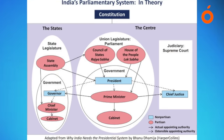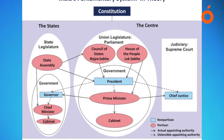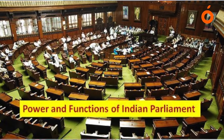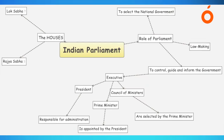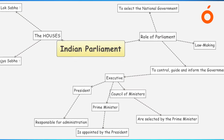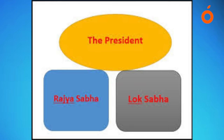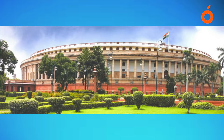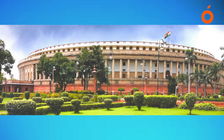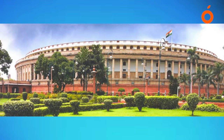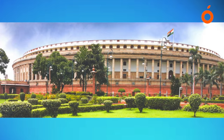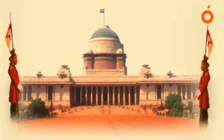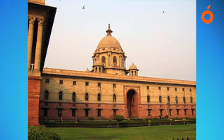One of the most important committees includes the Financial Committees such as the Estimates Committee, Public Accounts Committee, and the Committee on Public Undertakings. The function of the Public Accounts Committee is to examine the annual accounts of the government and the accounts showing appropriation of different sums granted by Lok Sabha. The committee particularly scrutinizes the report of the Comptroller and Auditor General.